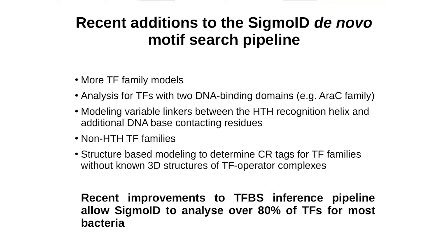We have improved the pipeline by adding more transcription factor family models, implemented motif inference for transcription factors with two DNA binding domains, and adjusted CR coordinates for several existing transcription factor families according to new structural information. All these improvements allow SIGMO to infer motifs for over 80% of transcription factors in most criteria.